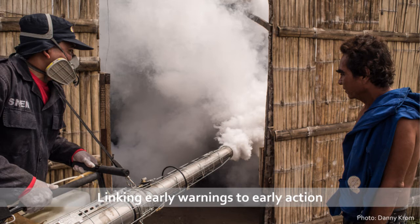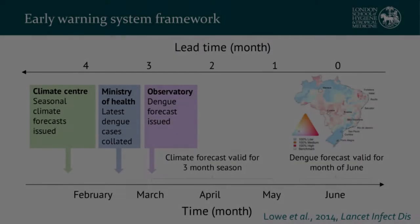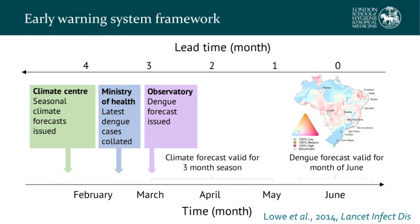When we know when and where we can intervene — or when we have limited resources — we can direct those resources to the places at greater risk. This is a schematic of an early warning system we put together for Brazil, set up so that three months in advance you can incorporate forecast climate information with case surveillance data to give an indication of increased incidence. We combine this information to make a probabilistic prediction three months ahead.